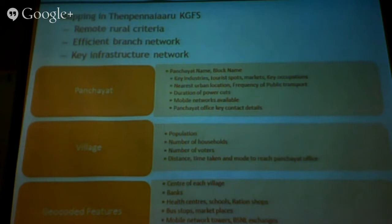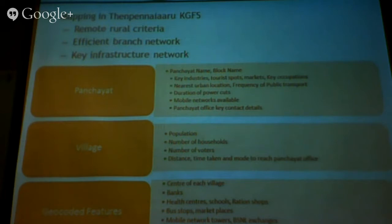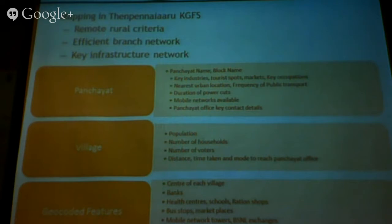The Krishnagiri District is in the shape of a horseshoe. We started with the first block — it has ten blocks — and moved upwards mapping everything. This was the first time we said population would be collected at village levels. At the Panchayat level, we collected the Panchayat name, which block it falls under, key industries, nearest urban location, frequency of public transport, duration of power cuts — which directly informs branch operations timings and generator needs — and mobile networks available.